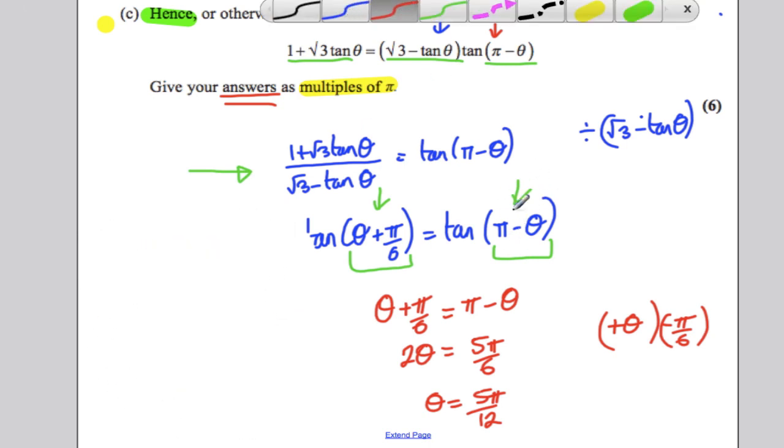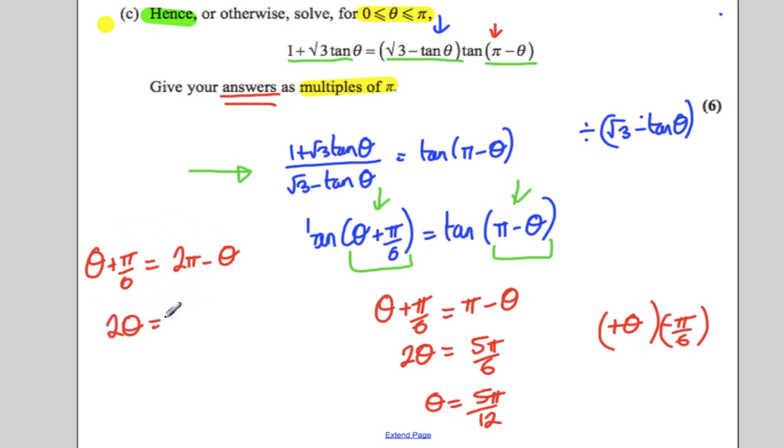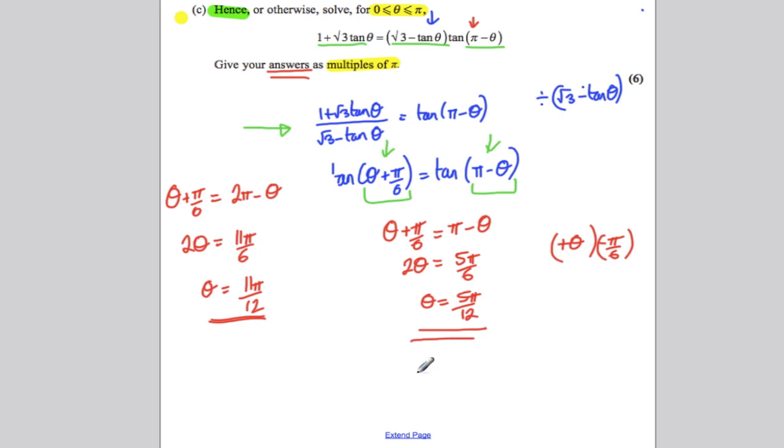The next one we could do, we could say, what if we added the pi to this side? Because that wouldn't change the value. And you would end up getting theta plus pi by 6 would be this added by pi. So you would get 2 pi minus theta. So add theta to both sides, 2 theta, and subtract the pi by 6. So you would get 11 pi by 6. And then theta would be that divided by 2, which would be 11 pi by 12. And that is in your range 0 to pi, so there are actually two solutions.